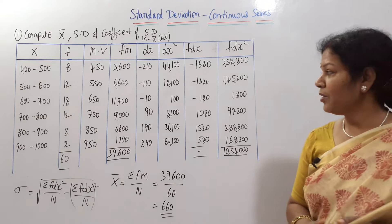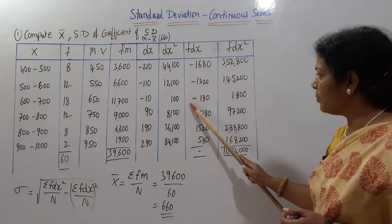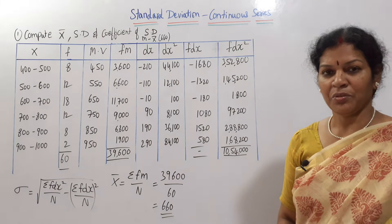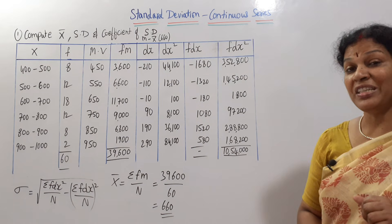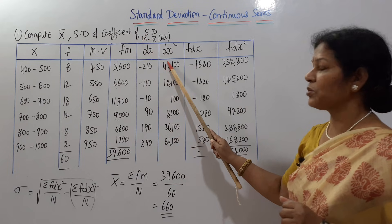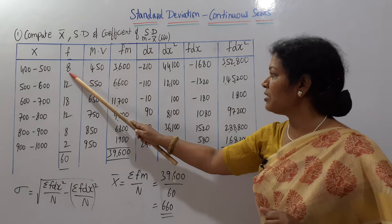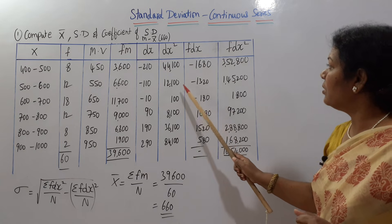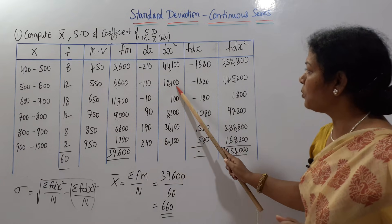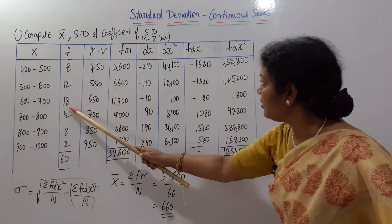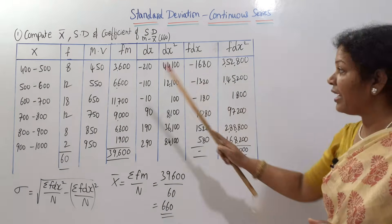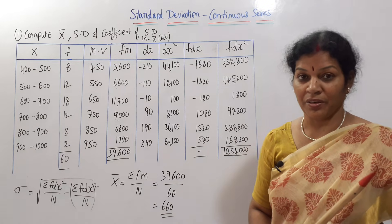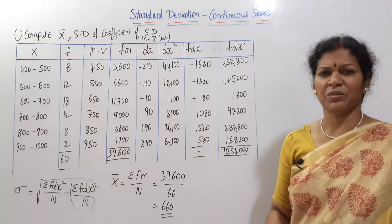We need the total of fdx. The minus values and plus values are equal, so the total of fdx is zero. Then for fdx squared (f into dx squared): 8 into 44,100 gives 352,800; 12 into 12,100 gives 1,45,200; 18 into 100 gives 1800. Like this, frequency into dx squared gives the fdx squared column. Be careful while calculating.